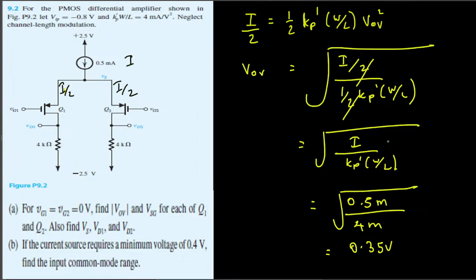Since this is a PMOS transistor — indicated by the arrow direction pointing into the gate and the use of Vtp and kp — the overdrive voltage is negative. Therefore Vov = negative 0.354 volts.